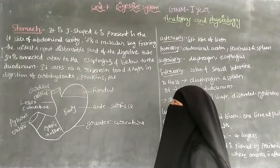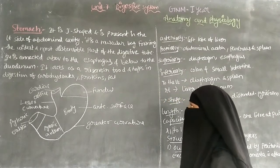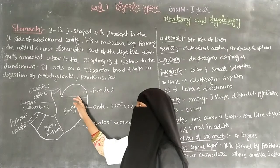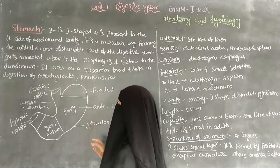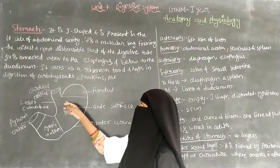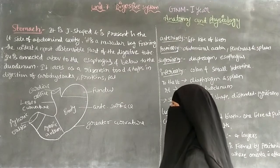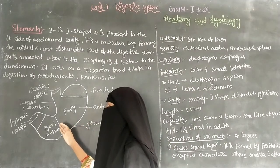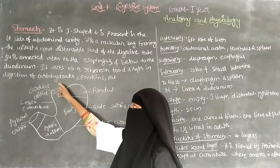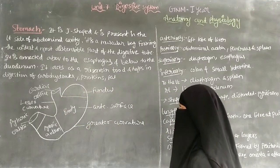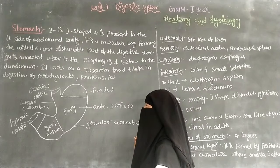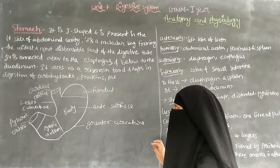The stomach is connected above to the esophagus and below to the duodenum. So the upper part connects to the esophagus and the lower part connects to the duodenum. It acts as a reservoir of food and helps in the digestion of carbohydrates, proteins, and fats.